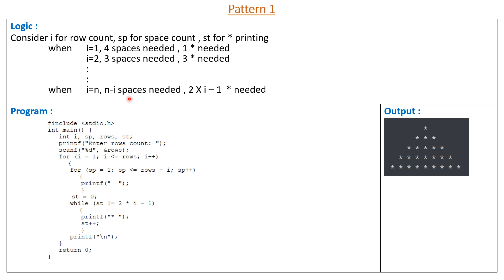For example, in the third row: how many spaces are present? 2 — that is n minus I, where n is 5, so 5 minus 3 equals 2. How many stars are present? 5 — that is 2 multiplied by I, where I is 3: 2 multiplied by 3 equals 6 minus 1 equals 5. So our logic is correct.